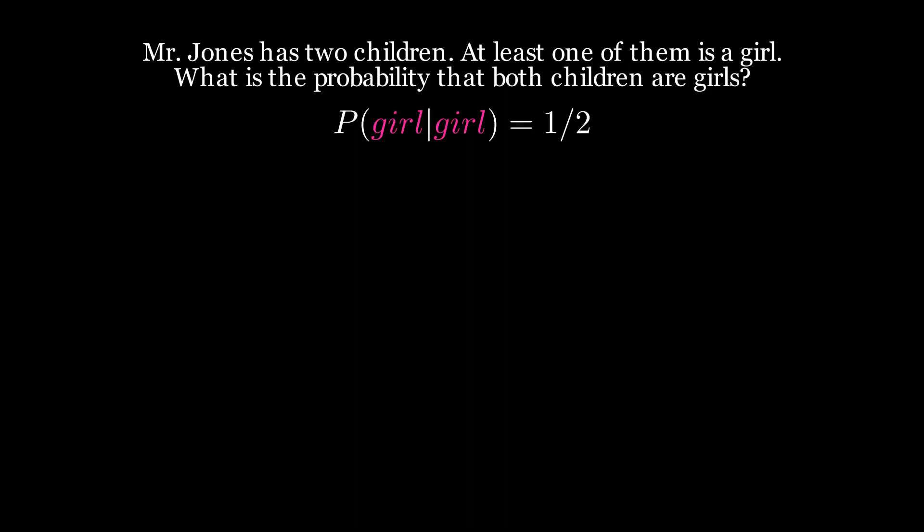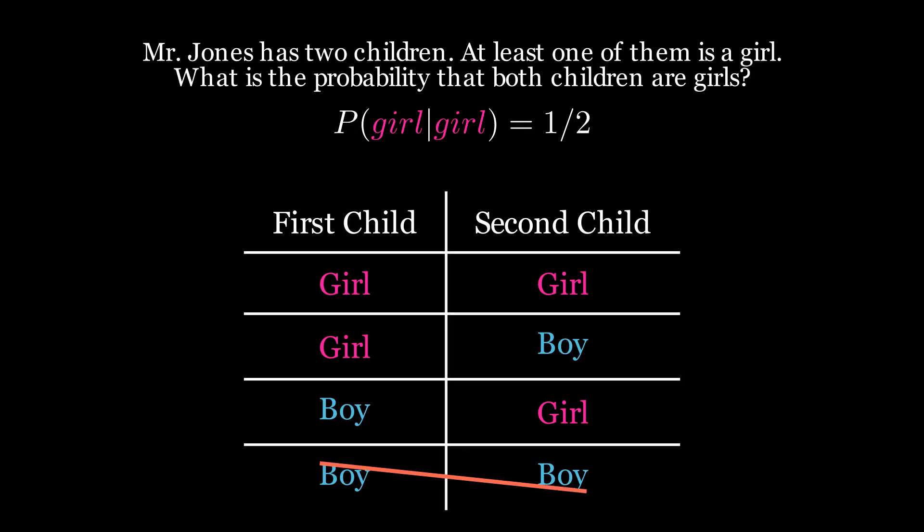But if we don't know which child is for sure the girl, then we have three outcomes that are equally likely. Either both are girls, or the older is a girl, or the younger is a girl.